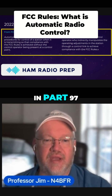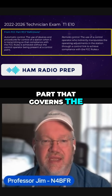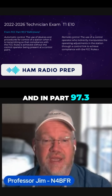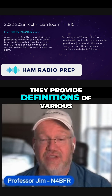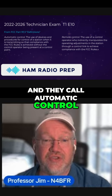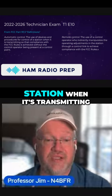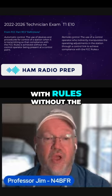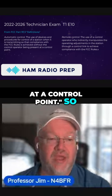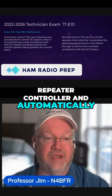They have a section in Part 97 — that's the FCC part that governs amateur radio — and in Part 97.3 they provide definitions of various items. They call automatic control the procedures of controlling a station when it's transmitting in compliance with rules, without the control operator being present at a control point.